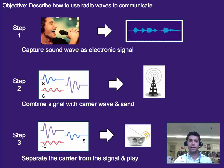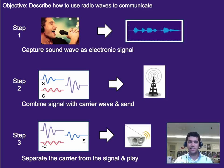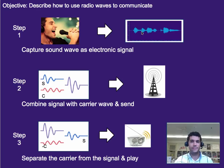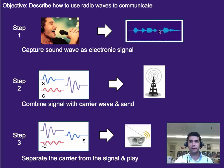This could be somebody singing, a text message, or really any information. But first we have to turn that information into an electronic form — not necessarily digital, but just an electrical signal. We use a microphone to turn a sound wave into an electronic form, like a varying voltage. So we capture it and turn it into an electronic signal.